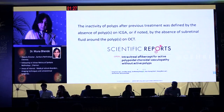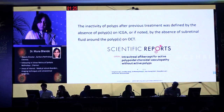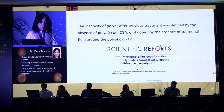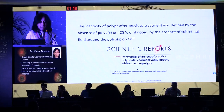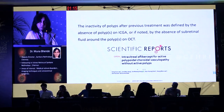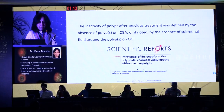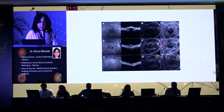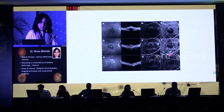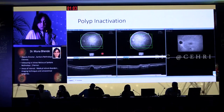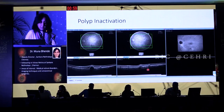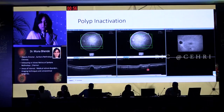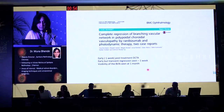This study described inactivity of polyps after previous treatment as the absence of polyps on ICGA, or if noted by the absence of subretinal fluid around the polyps on OCT. This helps because most of us follow up our patients on OCT. An example was given where the polyps disappeared on both ICG and OCT. In one of my own patients, post-treatment the polyps are persisting but the fluid has gone away — this is an example of polyp inactivation.